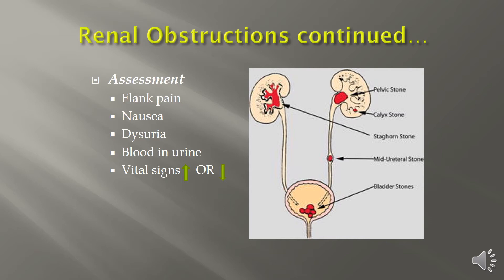We want to keep an eye on vital signs, specifically blood pressure, heart rate, and respiratory rate, as these can either decrease or increase depending on the patient's pain response. We also want to make sure we're doing thorough pain assessments so we can estimate where the obstruction may possibly be.